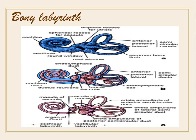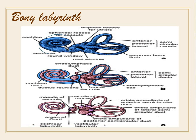This is a diagram of the bony labyrinth of the inner ear. This is the cochlea, these are the three semicircular canals, and this is the vestibule. The three semicircular canals are the anterior, posterior, and lateral semicircular canals. This is the common bony limb, the oval window, the round window, and the vestibule.